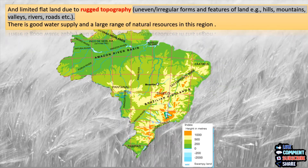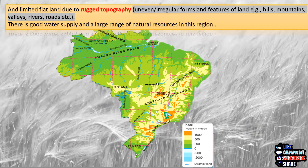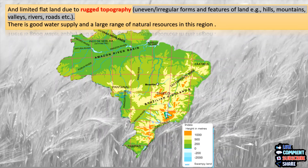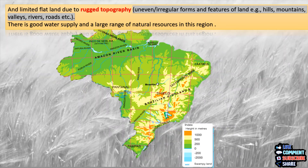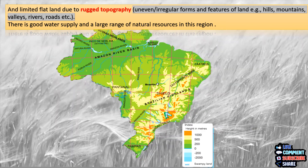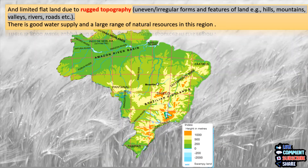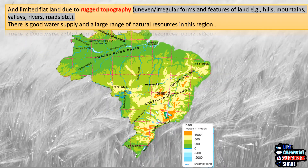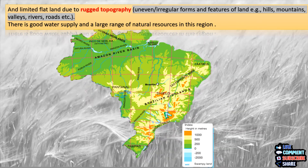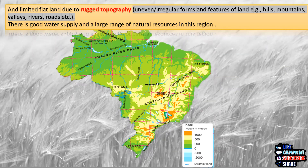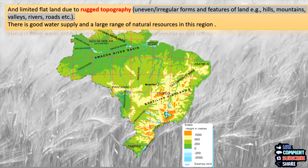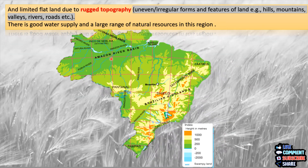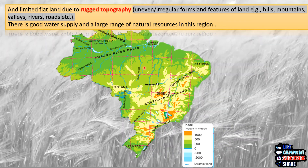Now what do we mean by rugged topography? By rugged topography we mean uneven or irregular forms and features of land such as hills, mountains, valleys, rivers, roads, dams, oceans, etc. Despite this, here there is a good supply of water and a large range of natural resources. So in spite of these constraints, we find huge water supply and natural resources in this region.